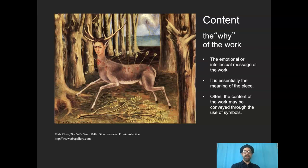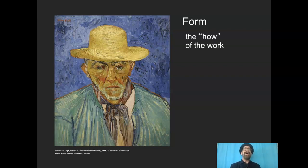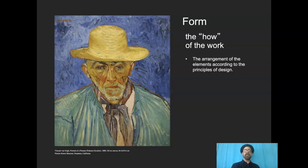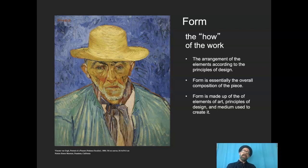And then form — the formal aspects of the work are the how of the work: how was it made? The arrangement of the elements according to the principles. The elements are the building blocks; the principles are the organizational ideas by which we arrange those building blocks. The overall composition of the piece — that's what we're dealing with here. Made up of the elements and principles, and the medium used to create it — very critical choices to be made. The medium is a critical choice: what vehicle are you going to choose to convey this meaning in this subject matter?